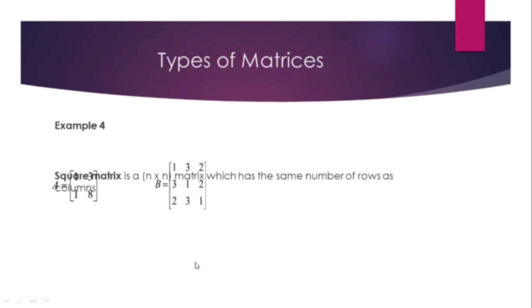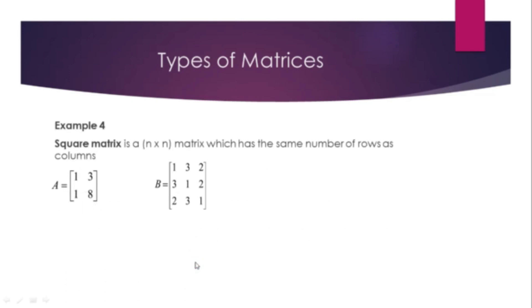Square matrix — an n by n matrix which has the same number of rows as columns. For example, matrix A is 2 by 2, and matrix B is 3 by 3.